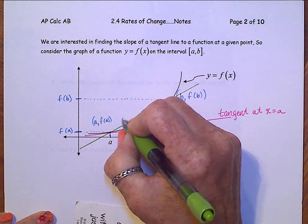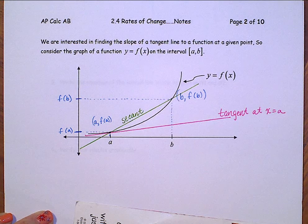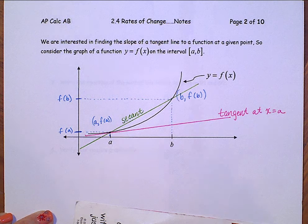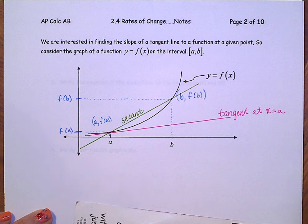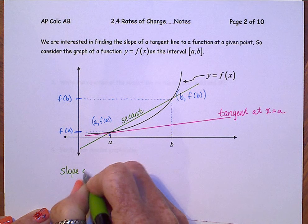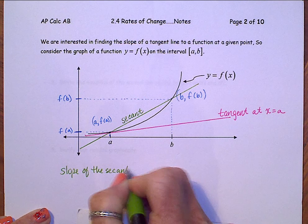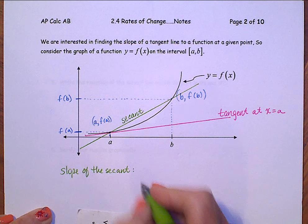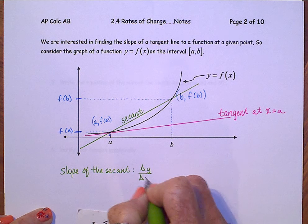There's a secant. And with this information, could you now find the slope of the secant line? Of course you can. Again, slope of a secant, change in y over change in x.